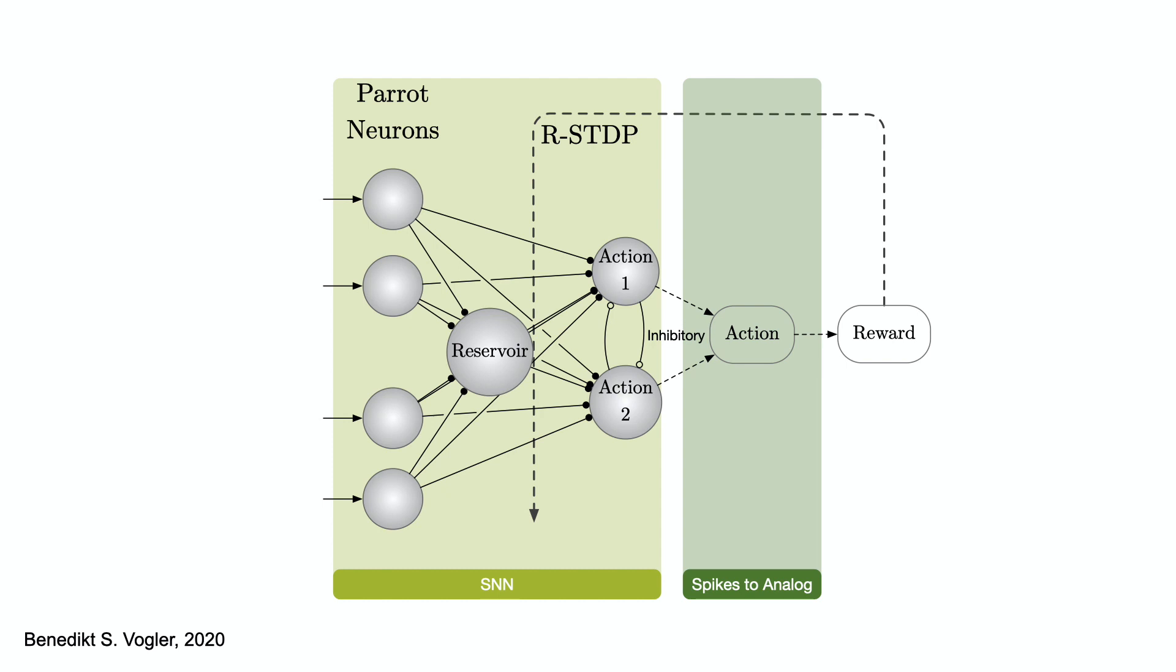For the input, place cells are used. For the output layer, rate code is used. Notice the lateral inhibition in the output layer. They are needed when the discrete action is chosen.